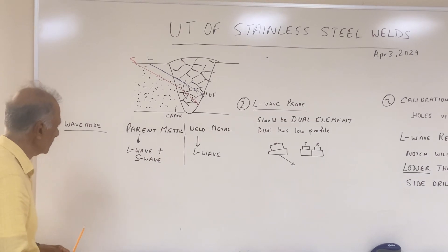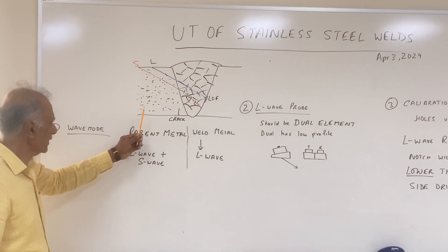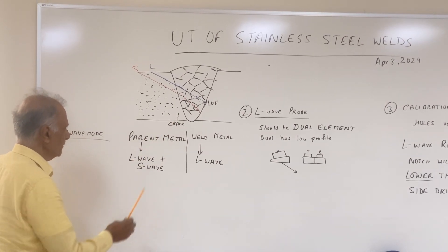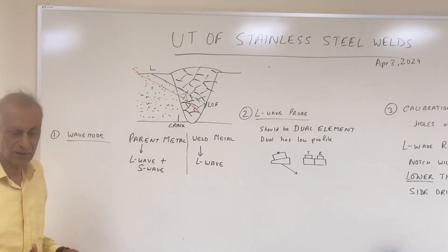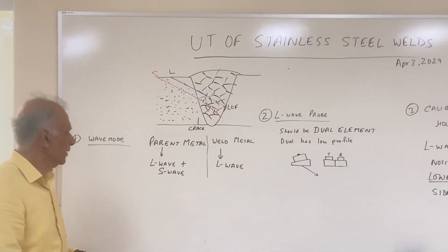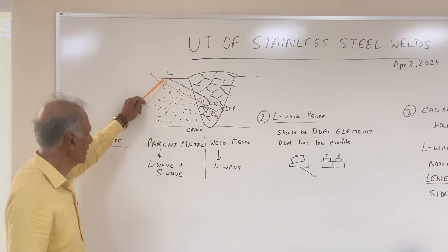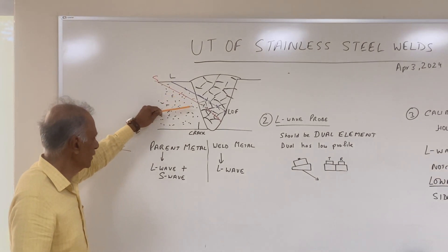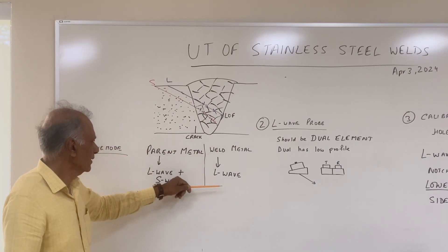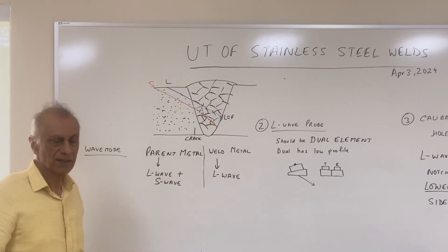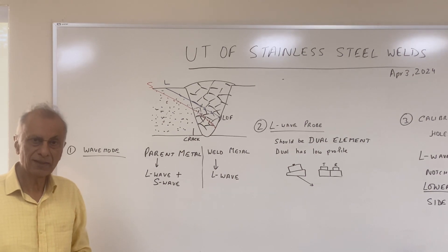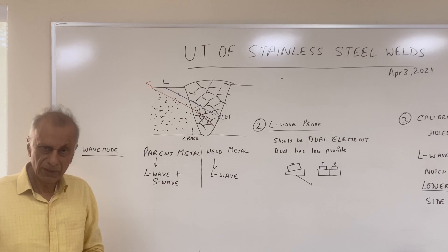Here I have the wave modes to use for the inspection of the stainless steel weld. For the parent metal, if you are looking for a crack, it can be inspected with L-waves as well as shear waves, because both penetrate into the parent metal of the stainless steel pipe. But in the weld metal, the wave which actually penetrates is the L-wave, because the shear wave scatters and also skews in the weld. So for the weld metal, the wave mode would be the longitudinal wave.